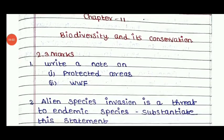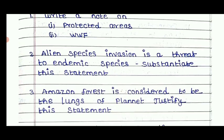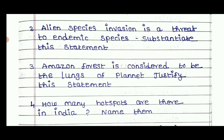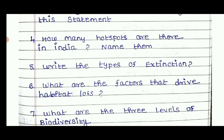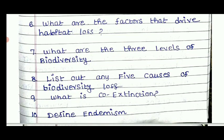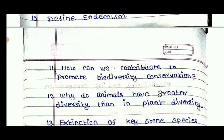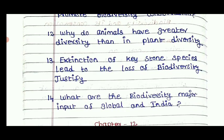For Chapter 11, Biodiversity and Conservation, 2-mark and 3-mark questions include: protected areas and WWF; analyze species diversity; why the Amazon forest is considered the lungs of the planet — justify this statement; how many biodiversity hotspots are there in India and name them; write the types of extinctions; what are the factors driving habitat loss; what are the three levels of biodiversity; list the causes of biodiversity losses; what is co-extinction; define endemic species; how can you contribute to promoting biodiversity conservation; and what are the actions of keystone species.